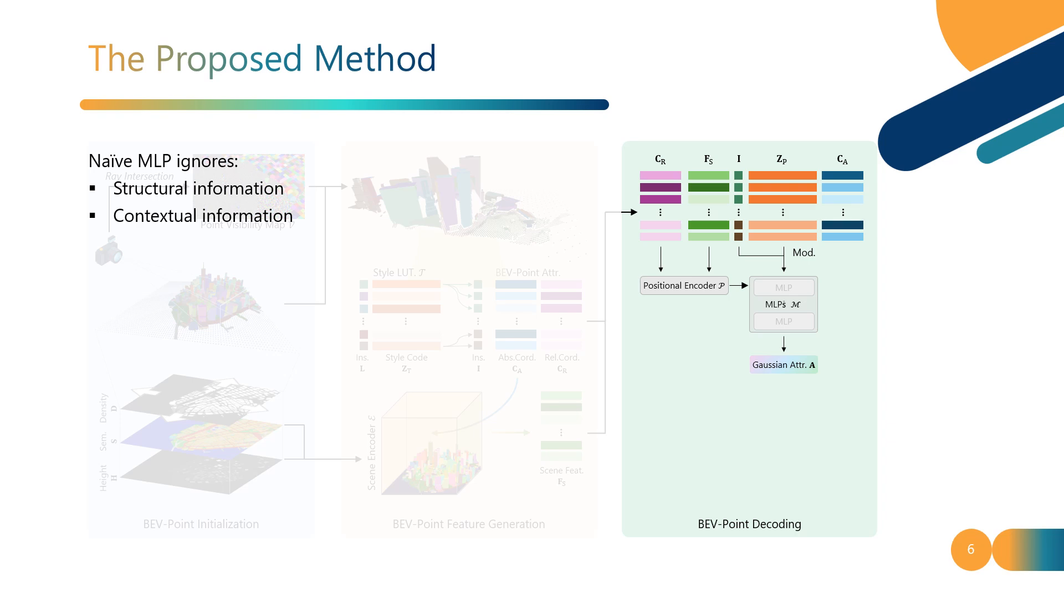Unlike image processing, where a sliding convolutional kernel captures the structural and contextual information of the image, this approach is infeasible for BEV points due to their unordered structure. To address this, we introduce the point serializer, which reorders the BEV points based on their coordinates, making them structured like image pixels.